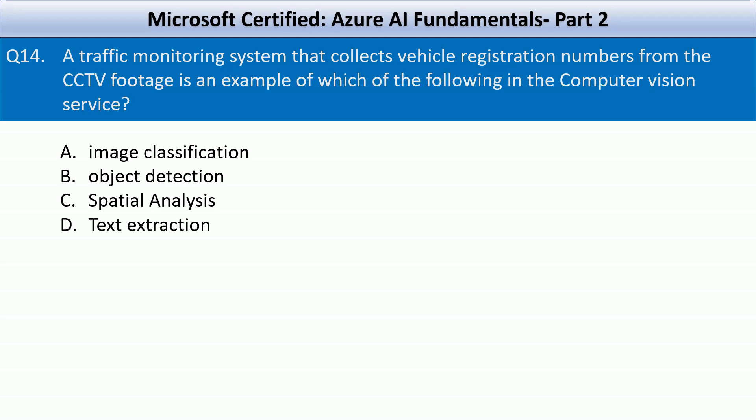A traffic monitoring system that collects vehicle registration numbers from CCTV footage is an example of which of the following in the computer vision service? Your options are image classification, object detection, spatial analysis, or text extraction.